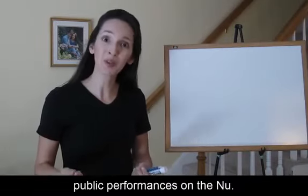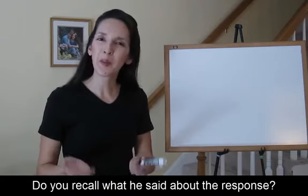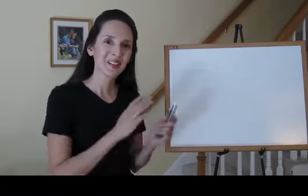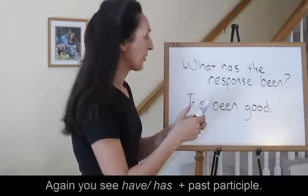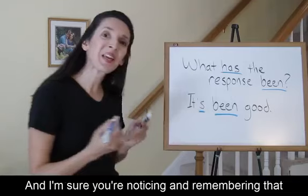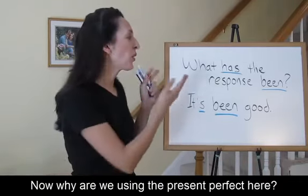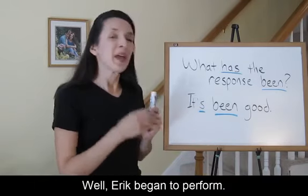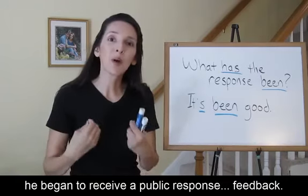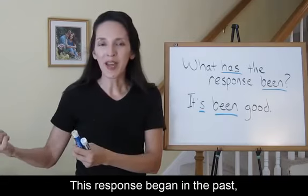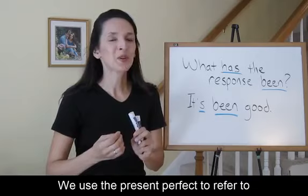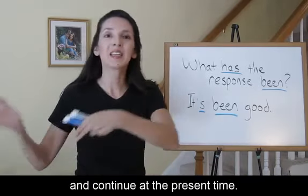So we know that Eric has given public performances on the new. Do you recall what he said about the response? I asked the question, what has the response been? And his answer, it's been good. Again you see, have or has, plus the past participle. Contractions are very common in spoken English. Eric began to perform, he's performed a number of times. But as soon as he started to perform, he began to receive a public response — feedback. This response began in the past and continues to now. So we use the present perfect to refer to actions or events that began in the past and continue at the present time.